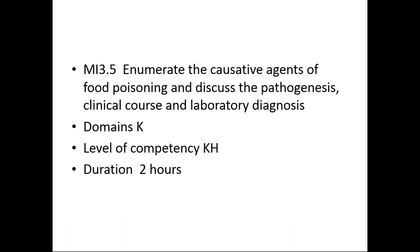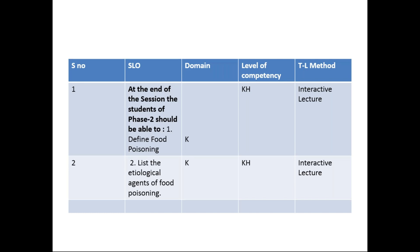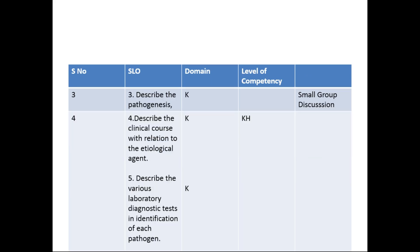Next: enumerate the causative agents of food poisoning and discuss the pathogenesis, clinical course, and laboratory diagnosis. Duration will be two hours. SLOs: first is define food poisoning, next is list the etiological agents of food poisoning — this will be an interactive lecture. Next SLO is describe the pathogenesis — it will be a small group discussion, with possible integration with the pathology department. Next SLO is describe the clinical course with relation to the etiological agent. Next SLO is describe the various laboratory diagnostic tests and identification of each pathogen.